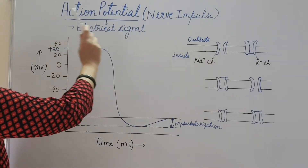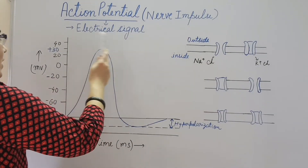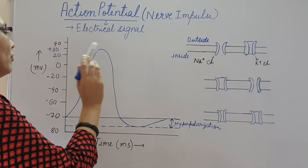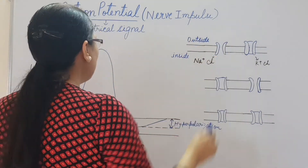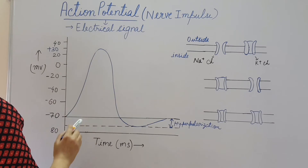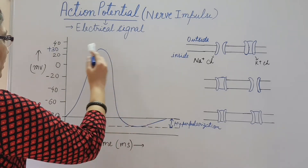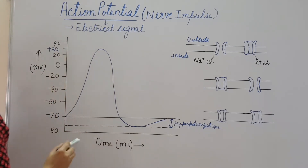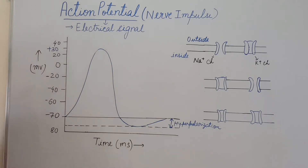Now let us see what is action potential, also known as nerve impulse. It is an electric signal produced due to the flow of ions across the plasma membrane. Action potential is the departure from the resting potential. We can understand it by this graph, where millivolts are along the y-axis and time in milliseconds is along the x-axis.